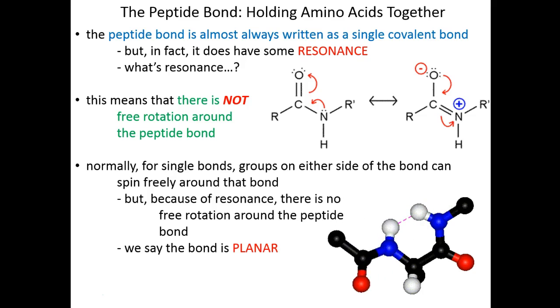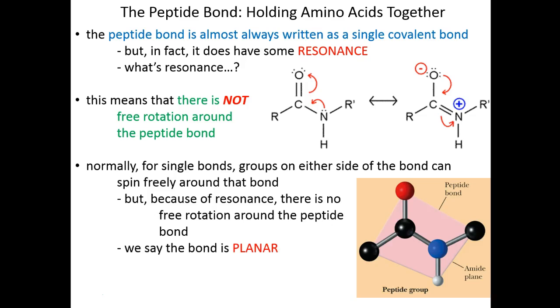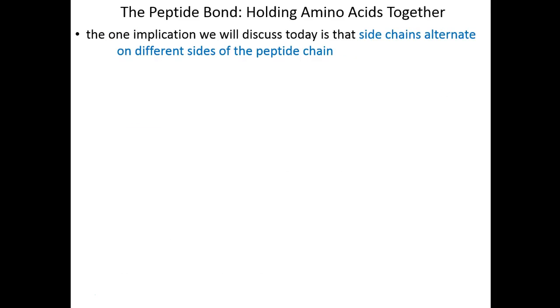We say the bond is planar, meaning most of the groups are in the same dimension, the same two-dimensional space. There's not much three-dimensional wiggle room across the peptide bond. This planar bond and its lack of free rotation has some implications for protein structure and shape.